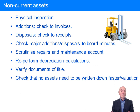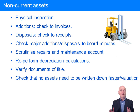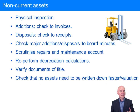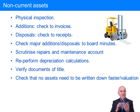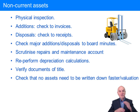Scrutinise the repair and maintenance account. You may remember from bookkeeping these kinds of problems: is certain expenditure an addition to a non-current asset or is it a repair? If it's done just to sustain operating capacity and revenue-generating ability, it tends to be a repair. If it enhances or increases the revenue-generating capacity of the asset, it tends to be an addition. What you don't want are items which should have been capitalised being written off to repairs and maintenance. This might be done deliberately to keep profit down, and therefore keep tax down.